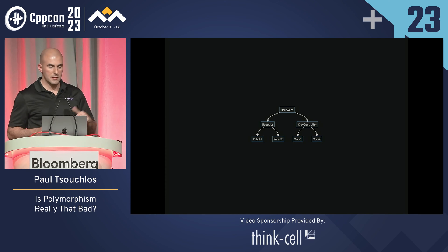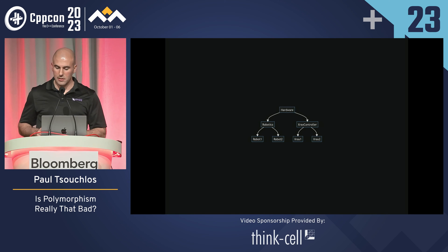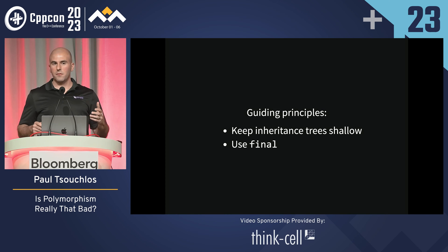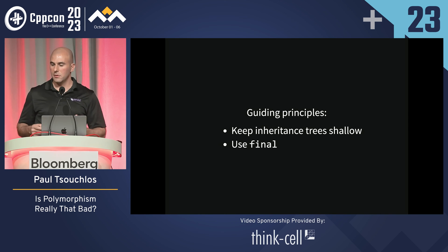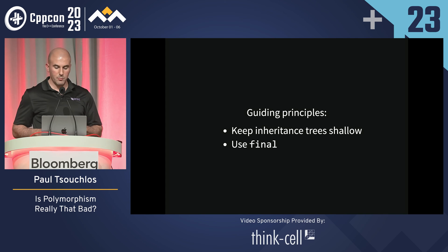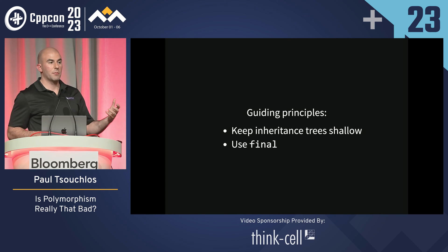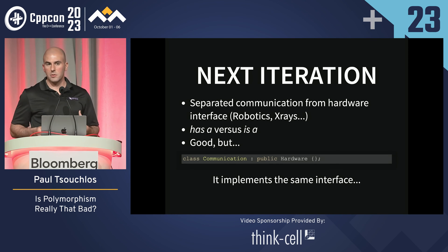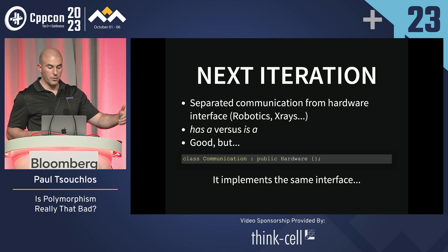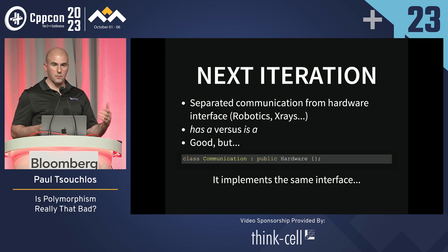We get an inheritance tree something like this. We wanted to apply further guiding principles of keeping our inheritance tree shallow and also using the keyword `final`, which helps the compiler out among other things. But we noticed another problem: each class was doing way too much. It was communicating to the external device while also providing all the logic to control the hardware and do the various functionalities.